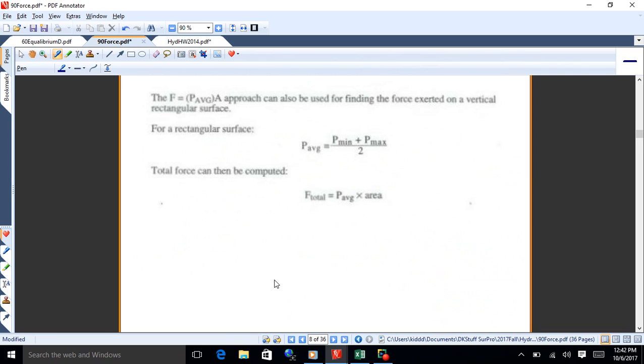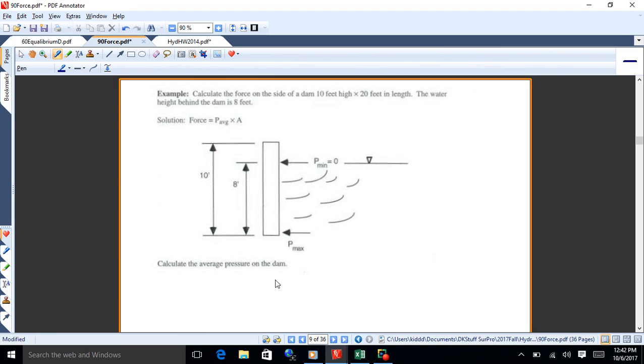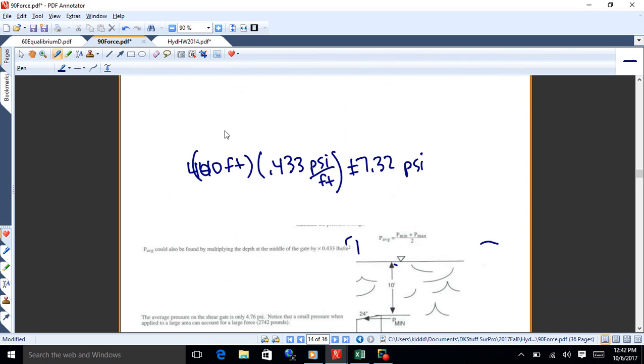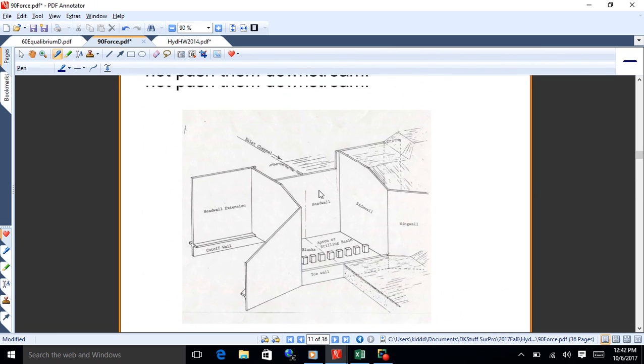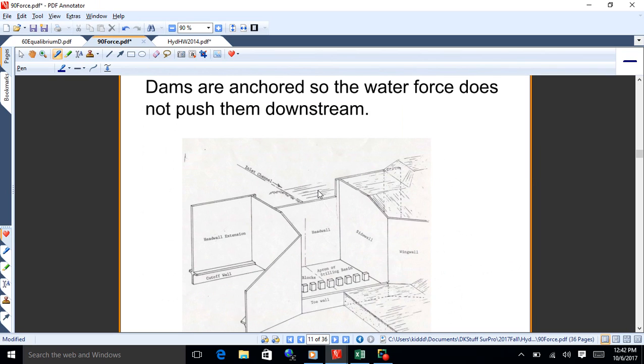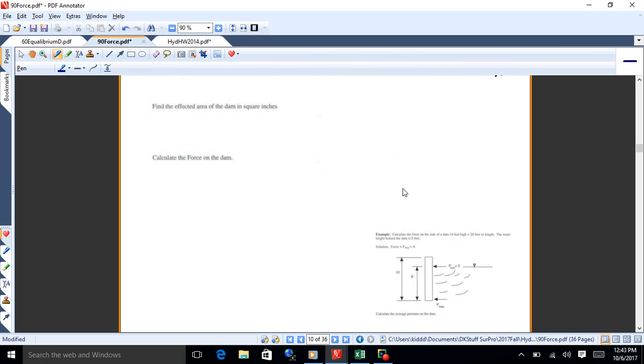All right, let's look at that more general method then. The thing is, to find the total force, this is page 80, you got to use the average pressure times the area. So, sometimes, in a case like this, if you've got a dam, a dam is basically a wall that backs up the water. If the wall there is 10 feet high, and then we've got 8 feet of water backed up behind it, and 20 feet of length to the dam, what we want to do here is find a couple of things. We want to find the average pressure on the dam.